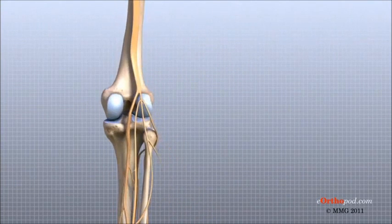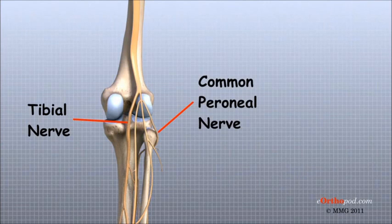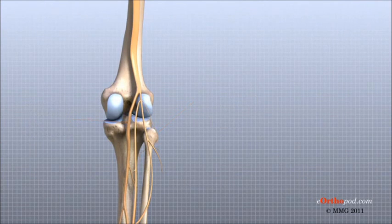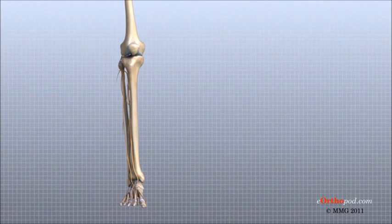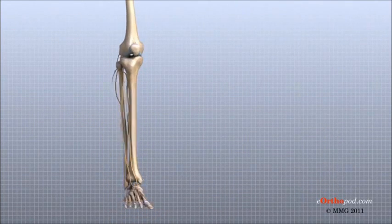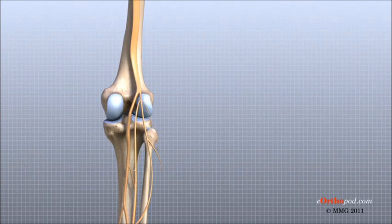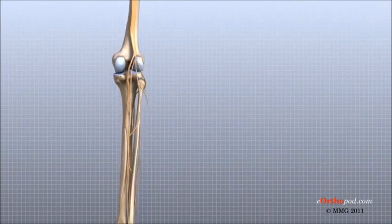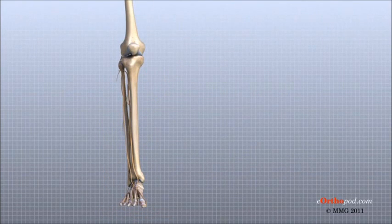The most important nerves around the knee are the tibial nerve and the common peroneal nerve in the back of the knee. These two nerves travel to the lower leg and foot, supplying sensation and muscle control. The large sciatic nerve splits just above the knee to form the tibial nerve and the common peroneal nerve. The tibial nerve continues down the back of the leg, while the common peroneal nerve travels around the outside of the knee and down the front of the leg to the foot. Both of these nerves can be damaged by injuries around the knee.